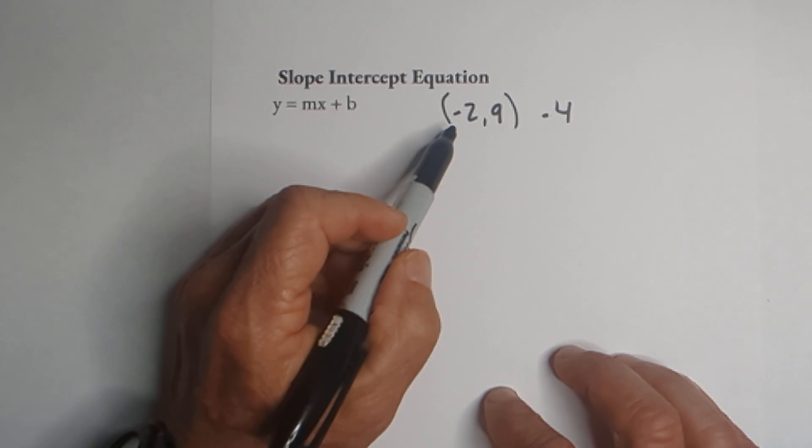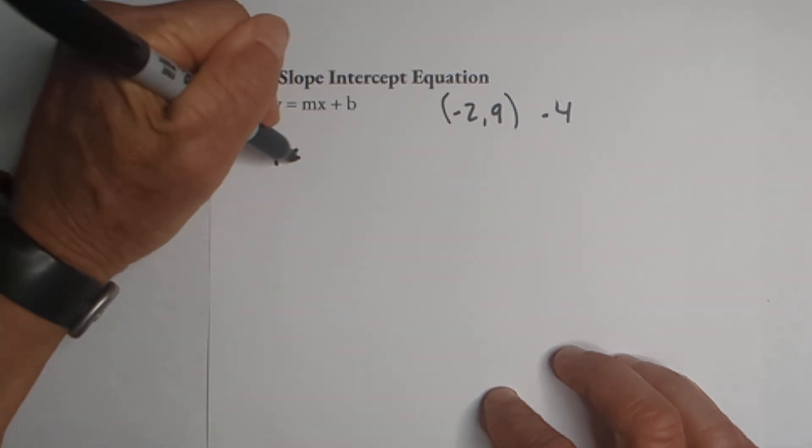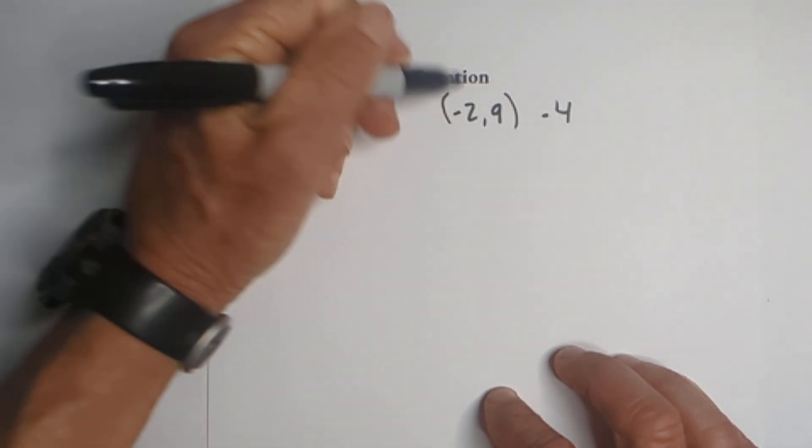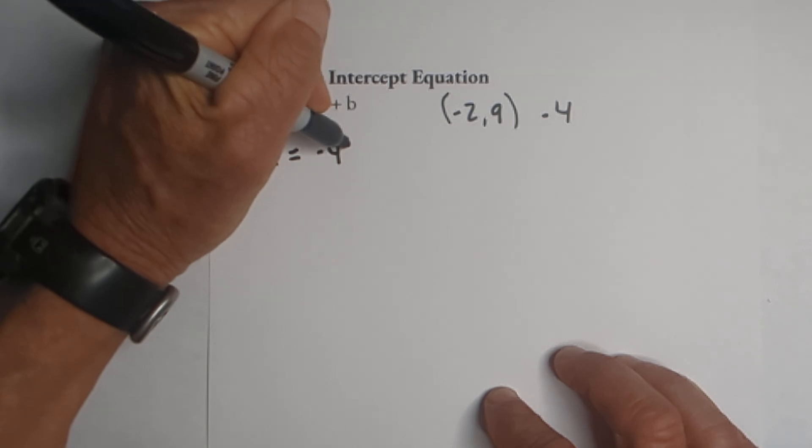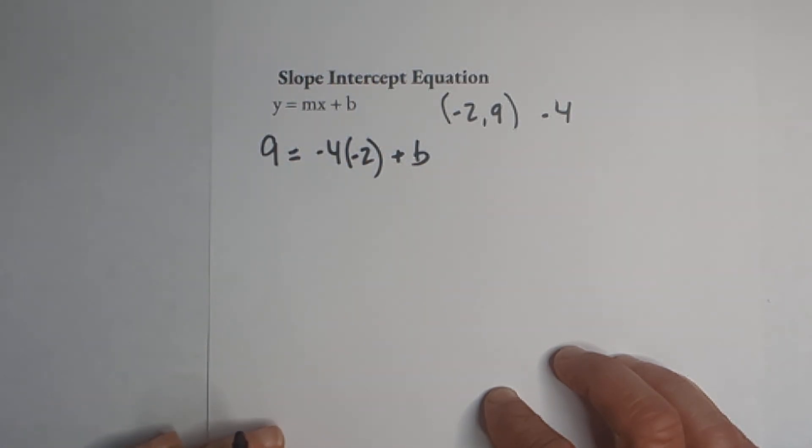We have a y of nine, we have a slope of negative four, and then we have an x of negative two. Now what we don't have is b.